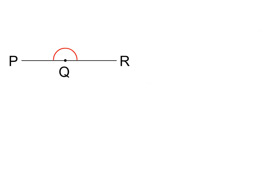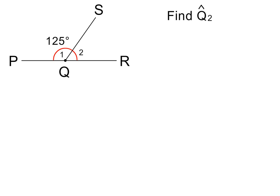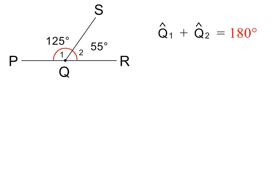Do you remember what the size of a straight angle or straight line is? It is 180 degrees — a very important fact to remember in mathematics. If I now add the line QS to the sketch, we get two adjacent angles: angle Q1 and angle Q2. If angle Q1 equals 125 degrees, what will the size of angle Q2 be? To find this angle, we subtract 125 degrees from 180 degrees. Angle Q2 is therefore equal to 55 degrees. This means that if we add these two angles, we will get an answer of 180 degrees.